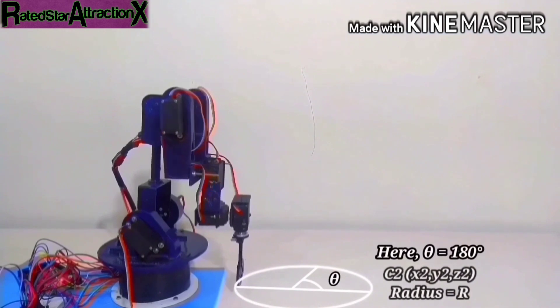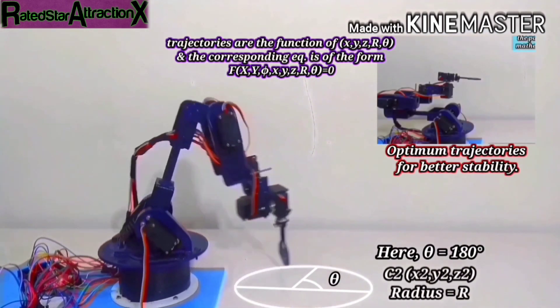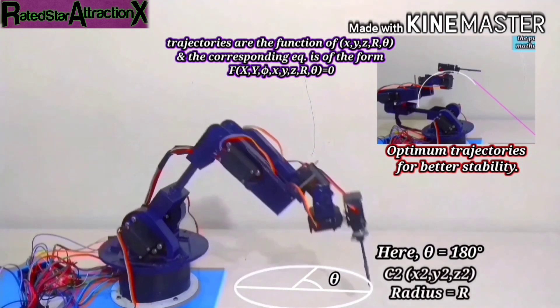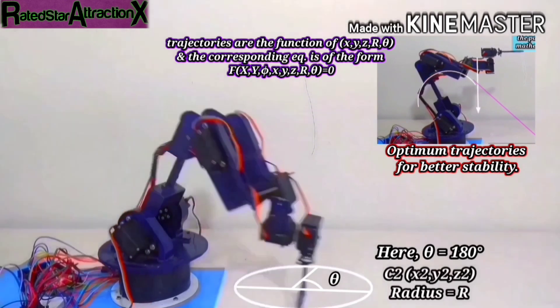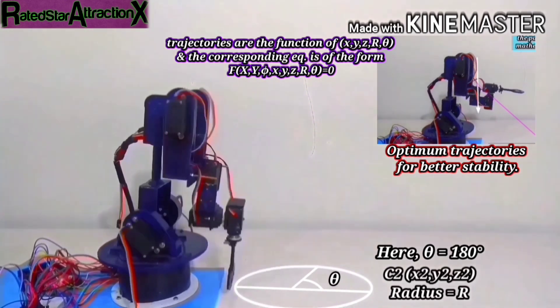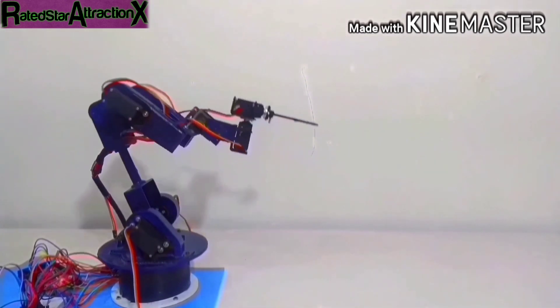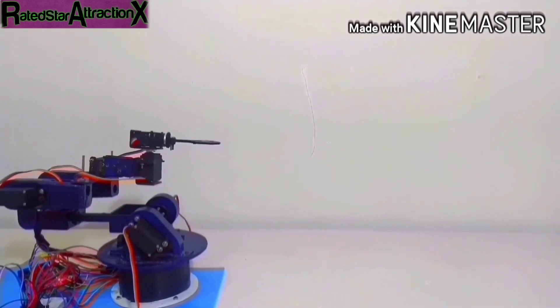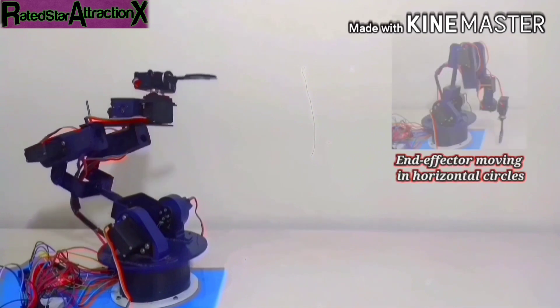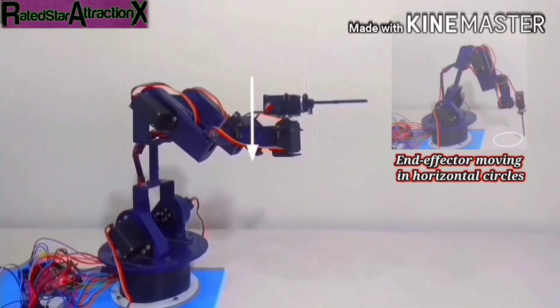The algorithms and maths used are so generalized that based on the parameters x, y, z, r and theta, the arm itself determines the optimum trajectory that it needs to follow to reach the theta point of the circle. Once it reaches the desired point on the desired circle, then only the end effector starts to move in the horizontal circular path.